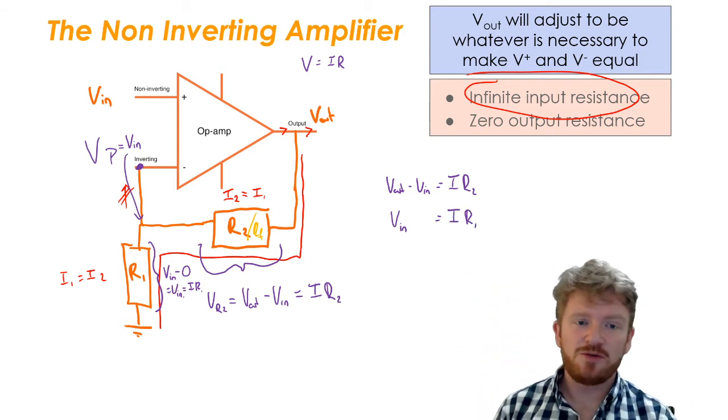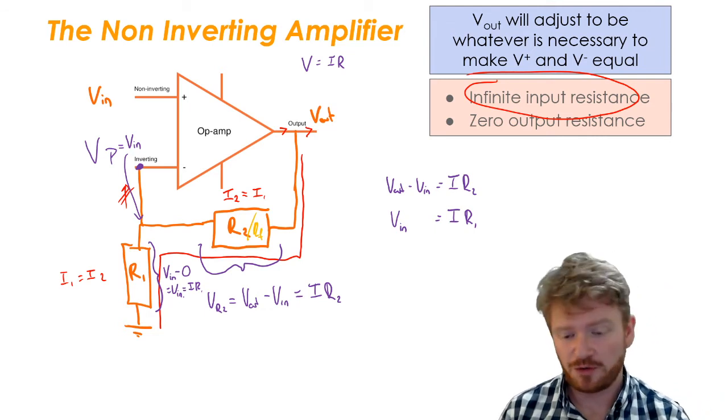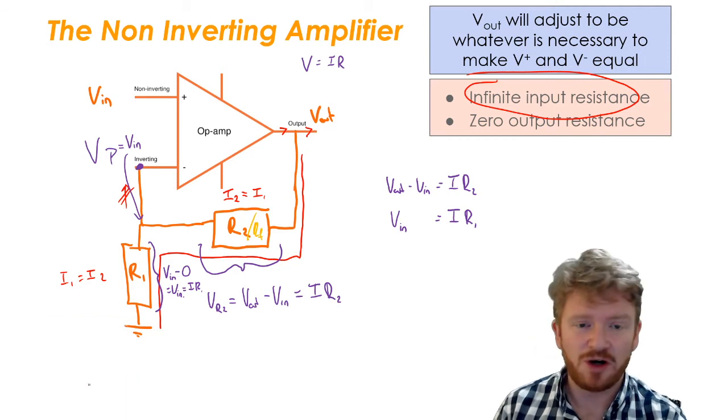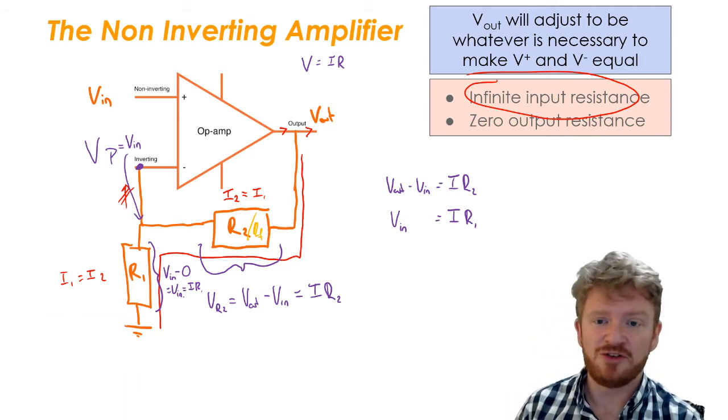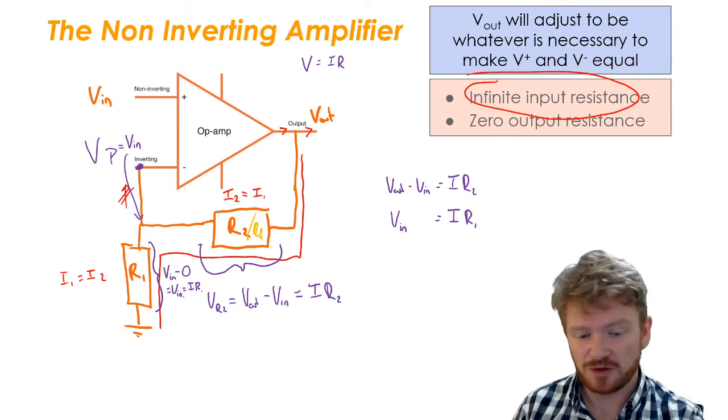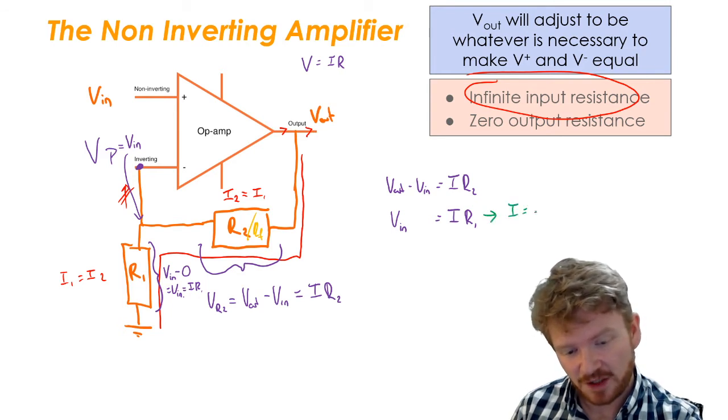Now, depending on your level of confidence with maths, you may be able to straight away solve this one, but I'm going to go through it simply for you as well. Clearly, I is something that I'm not really interested in. I may change depending on the output, and it's kind of irrelevant. So we're going to try and get rid of it. And to do that, I'm going to say that I is equal to Vin divided by R1.